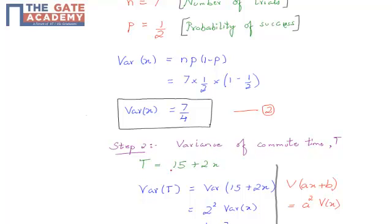Step 2: Find the variance of the time commuted. T equals 15 plus 2X, where 15 is the normal time required without any red light, and each red light adds a delay of 2 minutes. For X number of red lights, total time is 15 plus 2X. We need to find the variance of T, which equals the variance of 15 plus 2X.